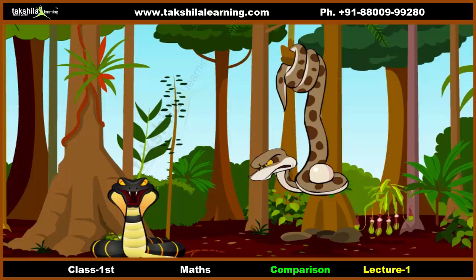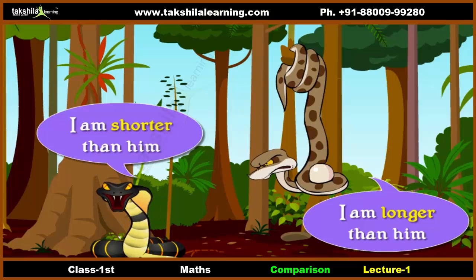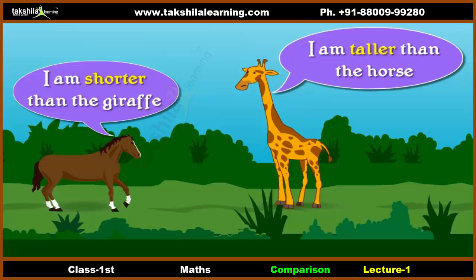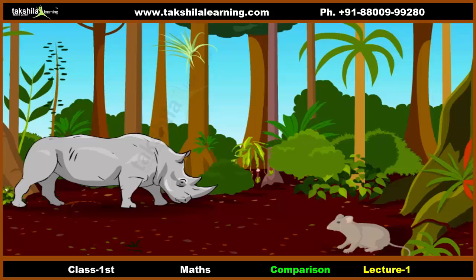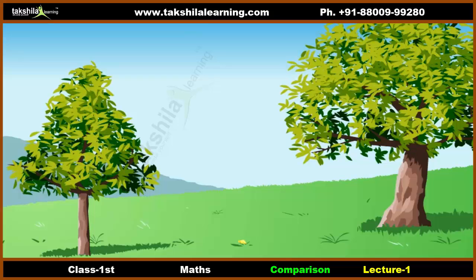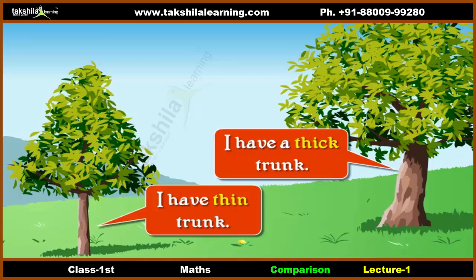When two objects are not of the same size, we compare them. I am longer than he is. I am shorter than him. I am taller than the horse. I am shorter than the giraffe. I am big. I am small. I have a thick trunk.